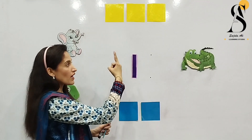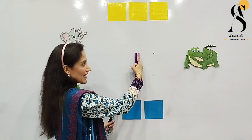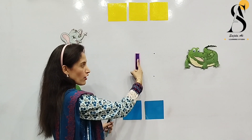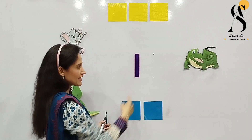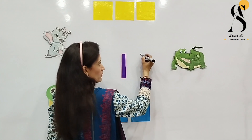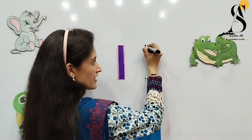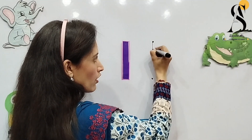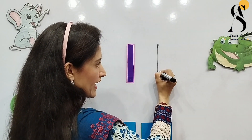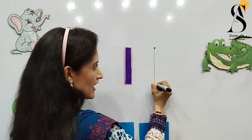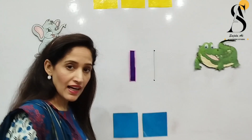How to make number one? It's like a standing line — you can draw a standing line like this. Let's write number one here. We will start from the dot, go straight, like this. And this is number one.